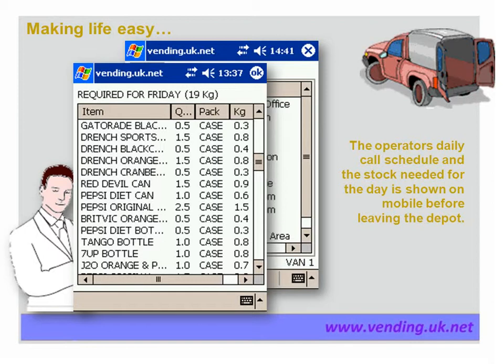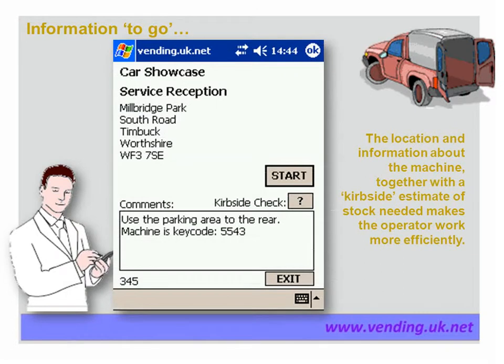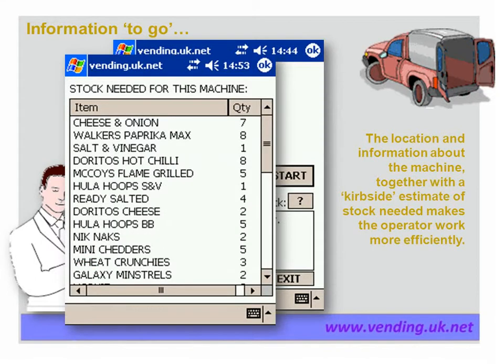Quantities on the screen are shown in case or box sizes together with the weight for each. The total weight to be loaded onto the van is shown at the top of the screen. Once the operator is on his way, the vending machine record shows the address and other important information on the screen. At the kerbside, an estimate of the products needed for the machine is shown on the mobile device, helping the operator carry the right amount of product from the van to the machine.